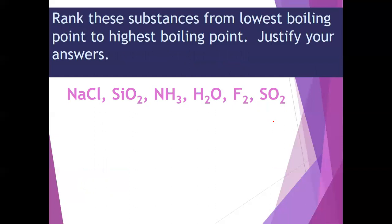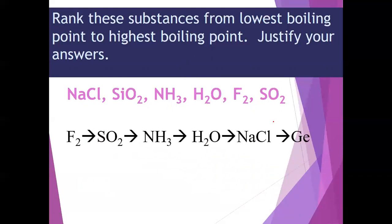Take a minute and look at these substances and rank them from the lowest boiling point to the highest boiling point, then justify your answers. The ranking is: fluorine has the lowest boiling point, and germanium atoms have the highest boiling point. That concludes our notes for intermolecular forces. If you have any questions, please feel free to contact me.